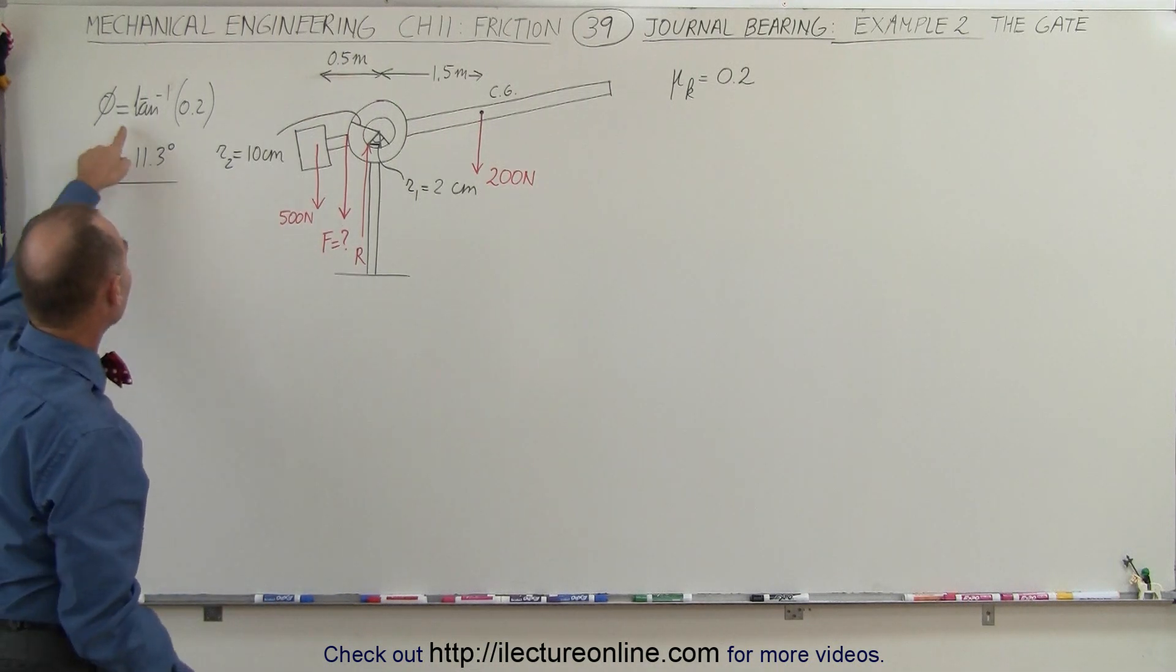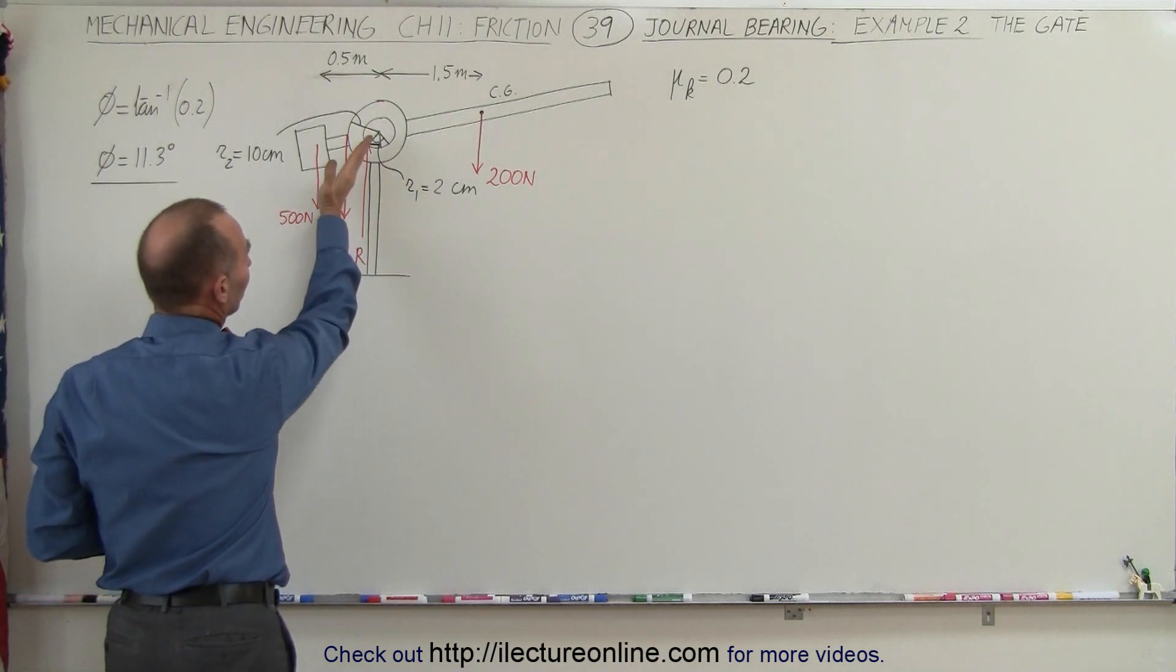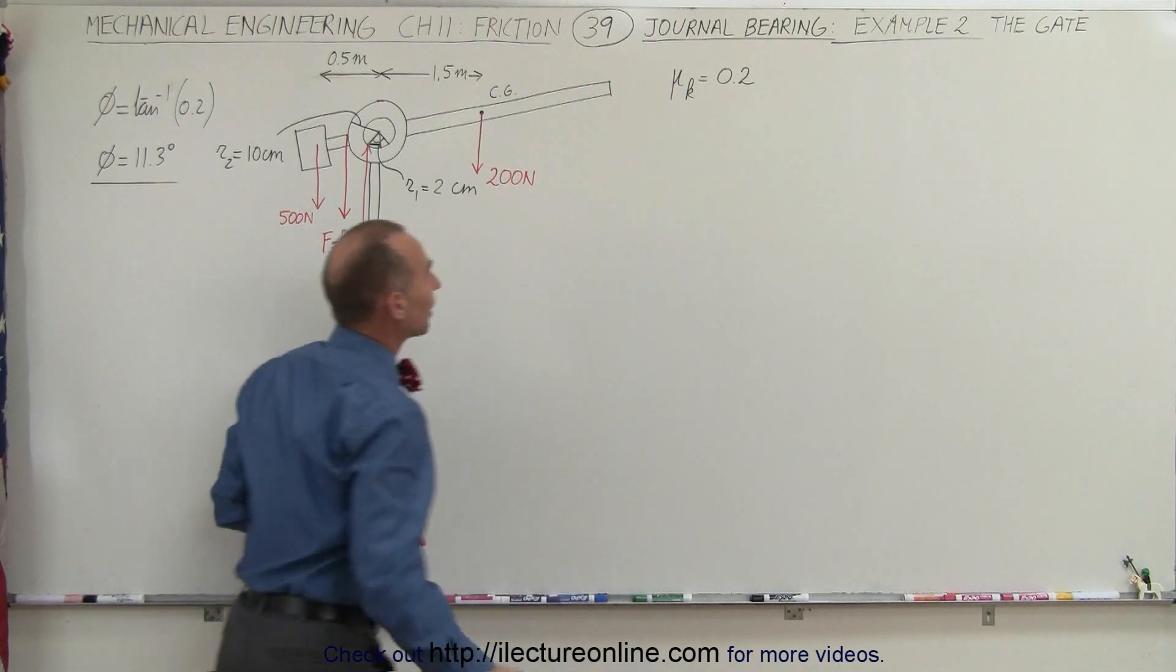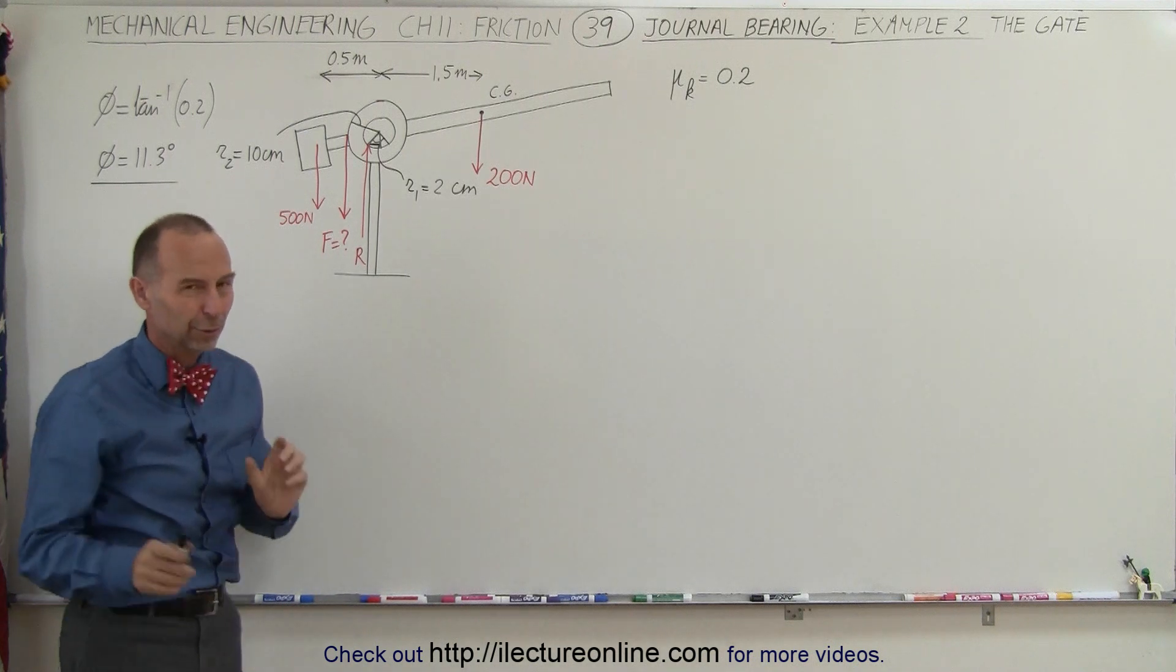Well, first of all, remember that to find the angle between the reaction force and the normal force, that's going to be found by taking the arc tangent of the kinetic coefficient of friction, which is equal to 11.3 degrees. We're going to need that later.